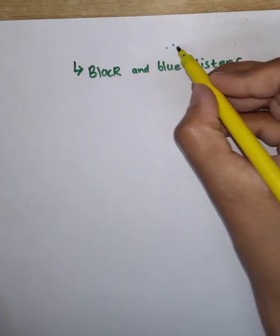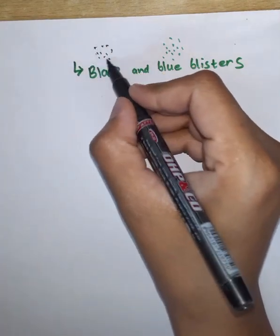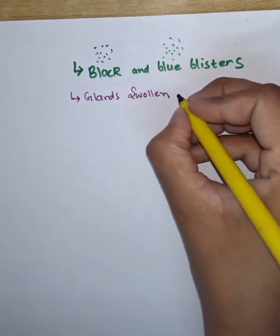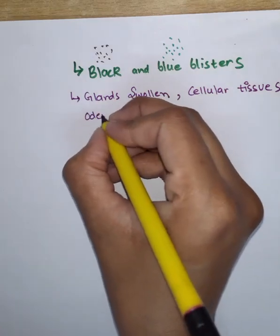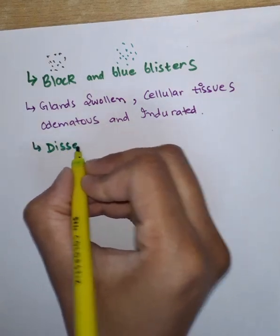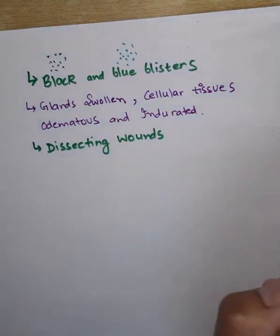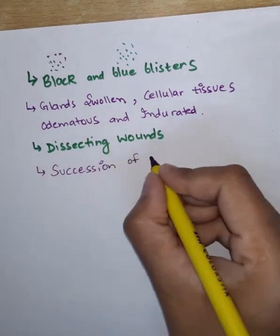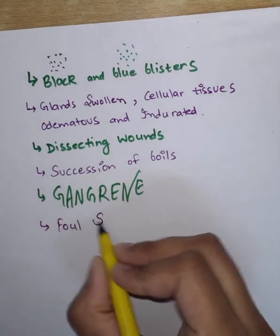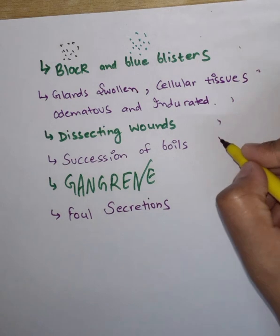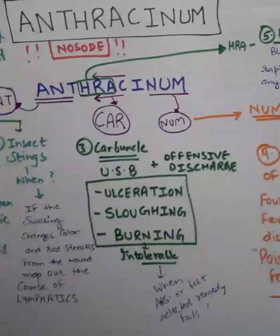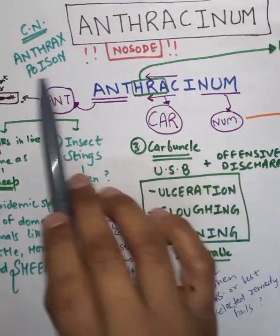Some other symptoms of Anthracenum involve superficial skin diseases: black and blue blisters, glands where the cellular tissue is edematous and indurated, dissecting wounds, succession of boils, gangrene, and foul secretions. So we have seven mini points related to superficial skin disease in Anthracenum.